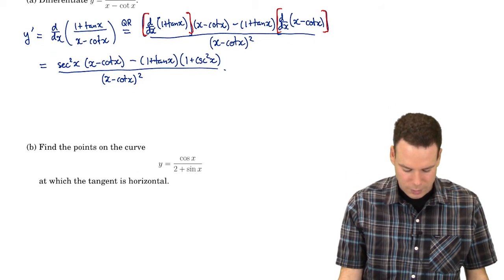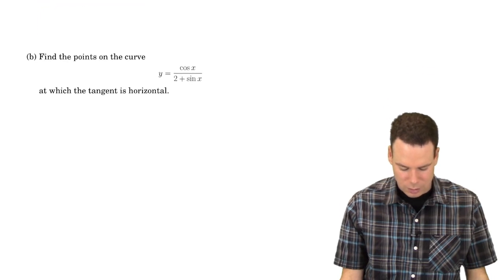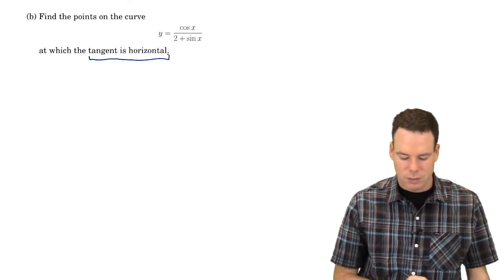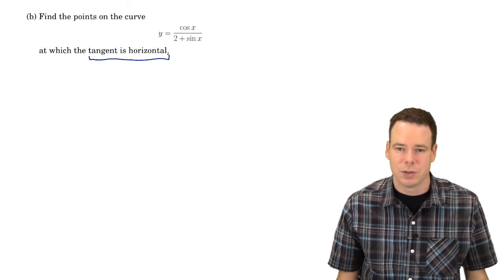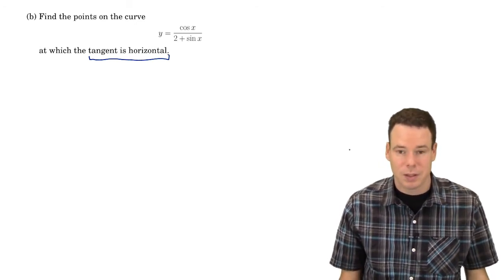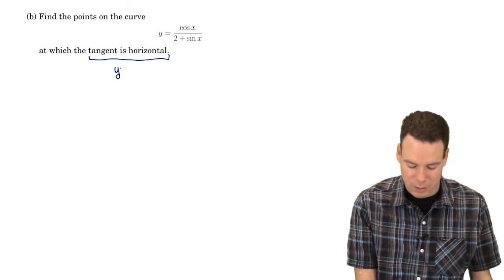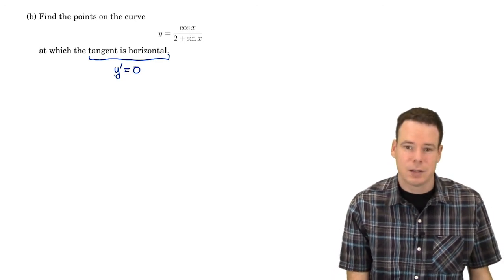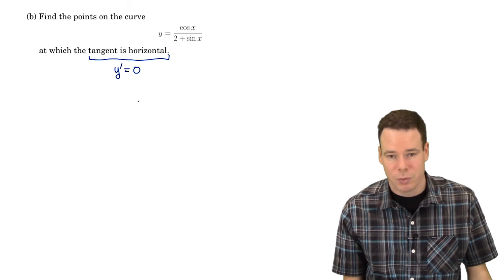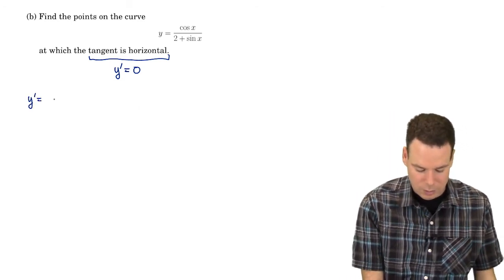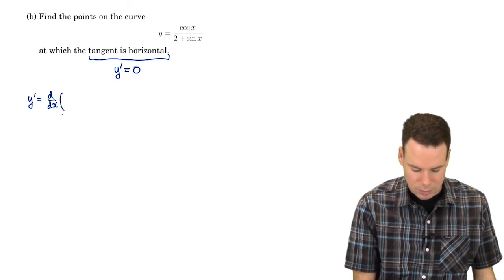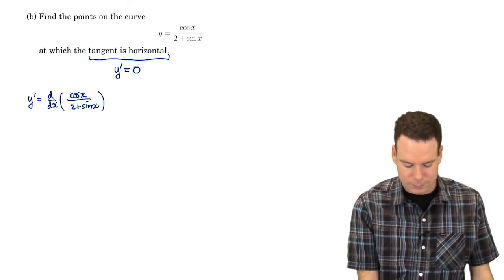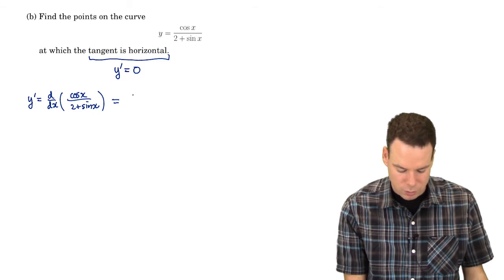How about the next example? Find the points on the curve at which the tangent is horizontal. What does it mean for the tangent to be horizontal? In terms of what we've been discussing in calculus, this is exactly the place where the derivative is 0. So we want to find where the derivative is 0 — that means we need to start with the derivative. So, what is the derivative of cosine of x over (2 plus sine of x)? Well, that's a quotient, so we'll use the quotient rule.